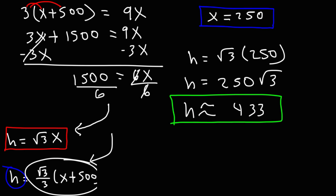So this is our final answer. But the exact answer is 250 times the square root of 3. So now you know how to solve a right triangle problem with two triangles inside of the larger triangle.